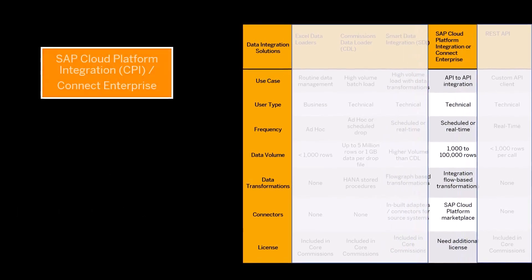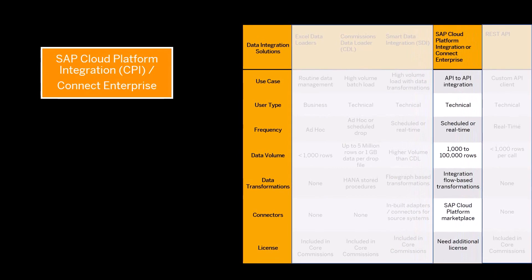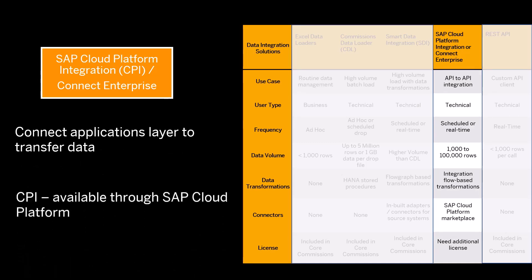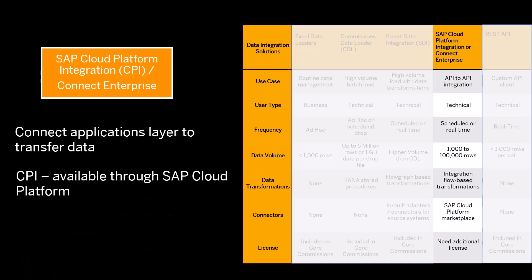SAP Cloud Platform Integration or CPI and Connect Enterprise handle similar use cases. Both tools connect applications to transfer data from one system to another. CPI is available through SAP Cloud Platform, whereas Connect Enterprise requires additional licenses. Both tools support mapping techniques for data transformations.